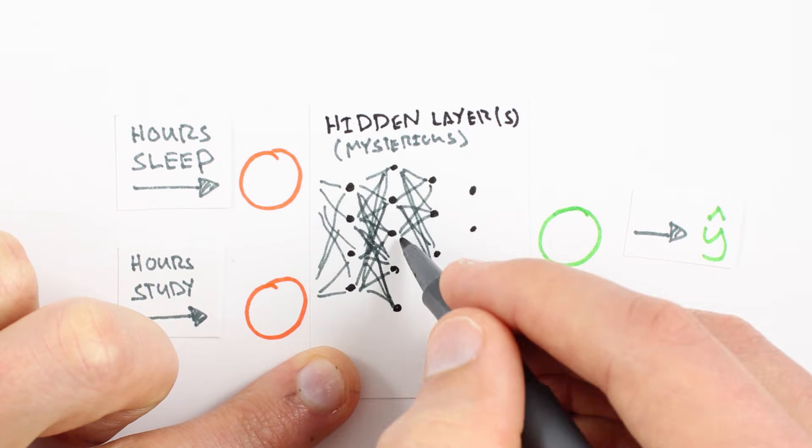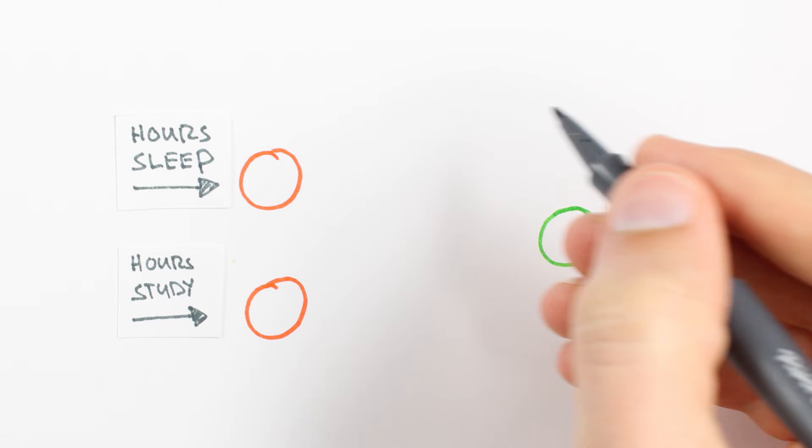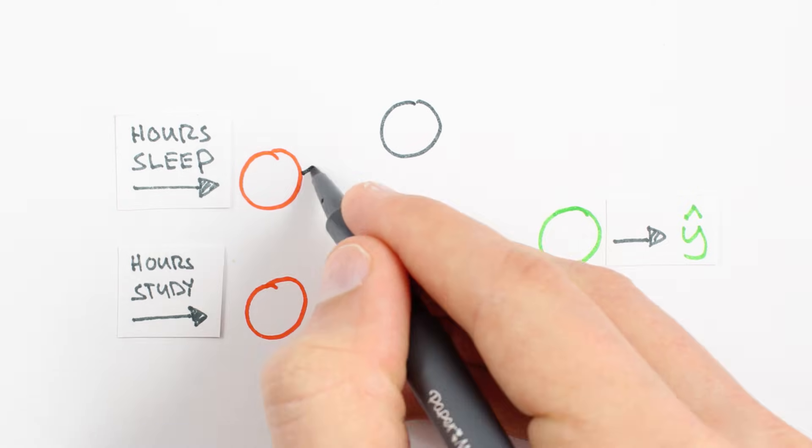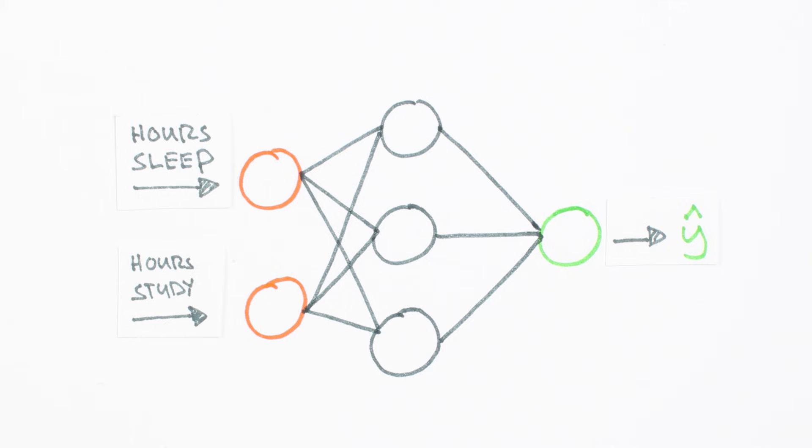Recently, researchers have built networks with many, many hidden layers. These are known as deep belief networks, giving rise to the term deep learning. Here, we're going to use one hidden layer with three hidden units. But if we wanted to build a deep neural network, we would just stack a bunch of these layers together.